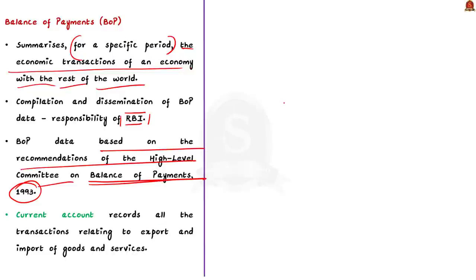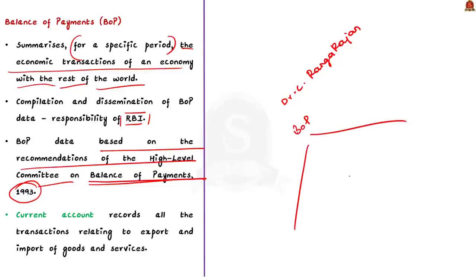This committee was chaired by Dr. C. Rangarajan, who is a former RBI Governor. Coming to BOP, it can be broadly divided into two accounts: one is the current account and the other is the capital account.